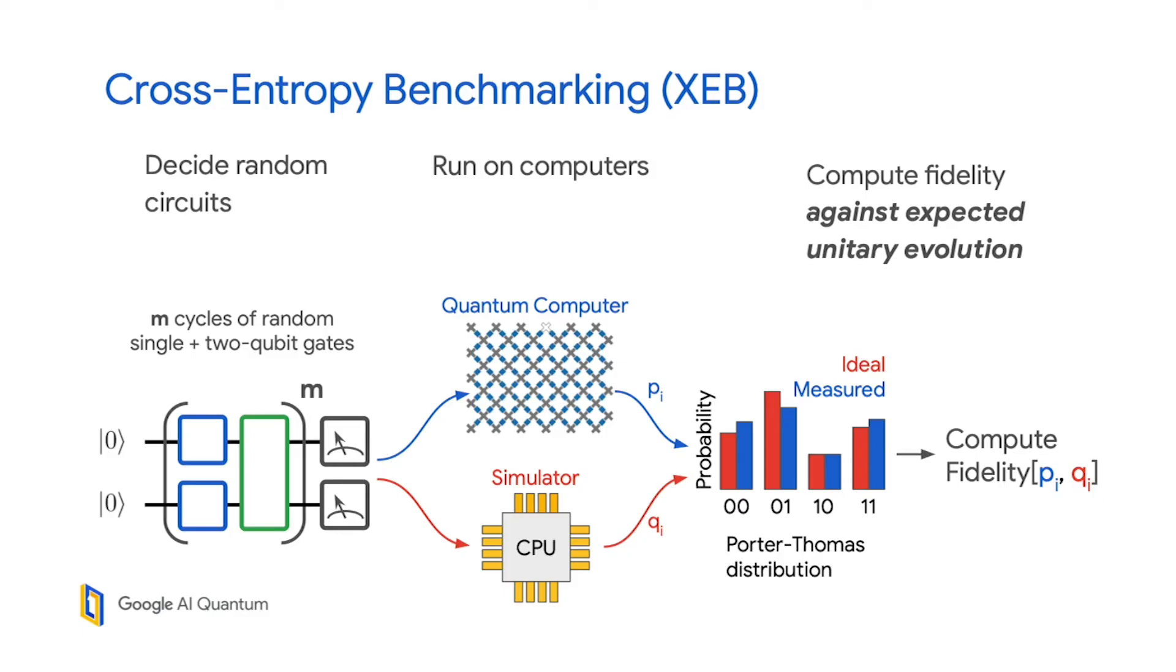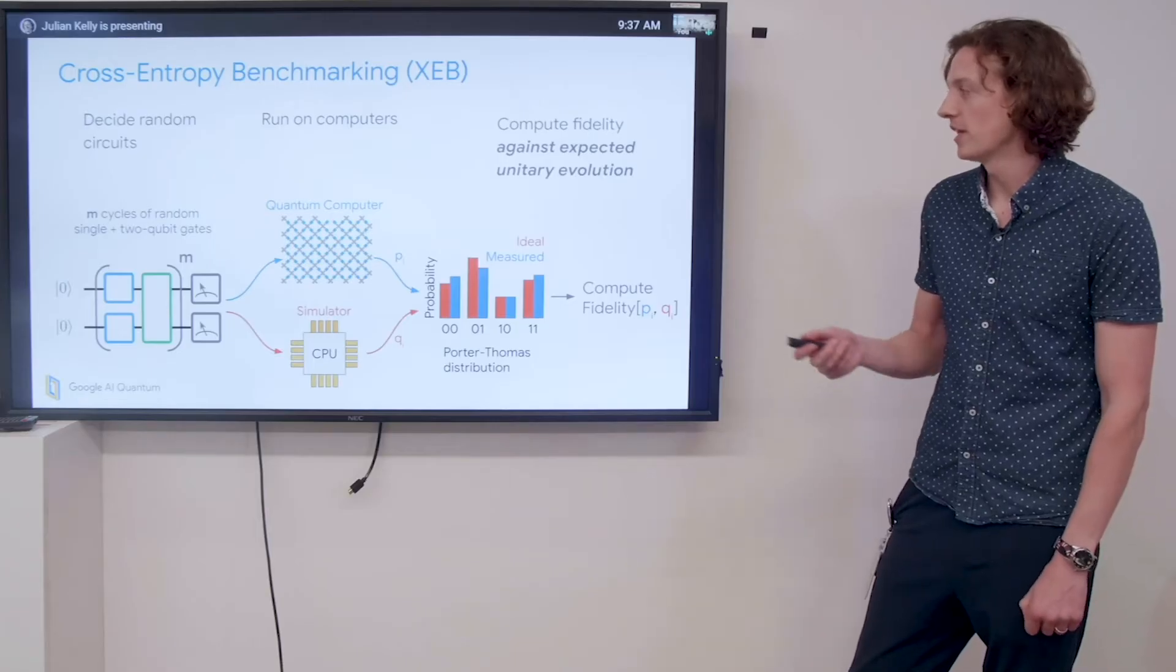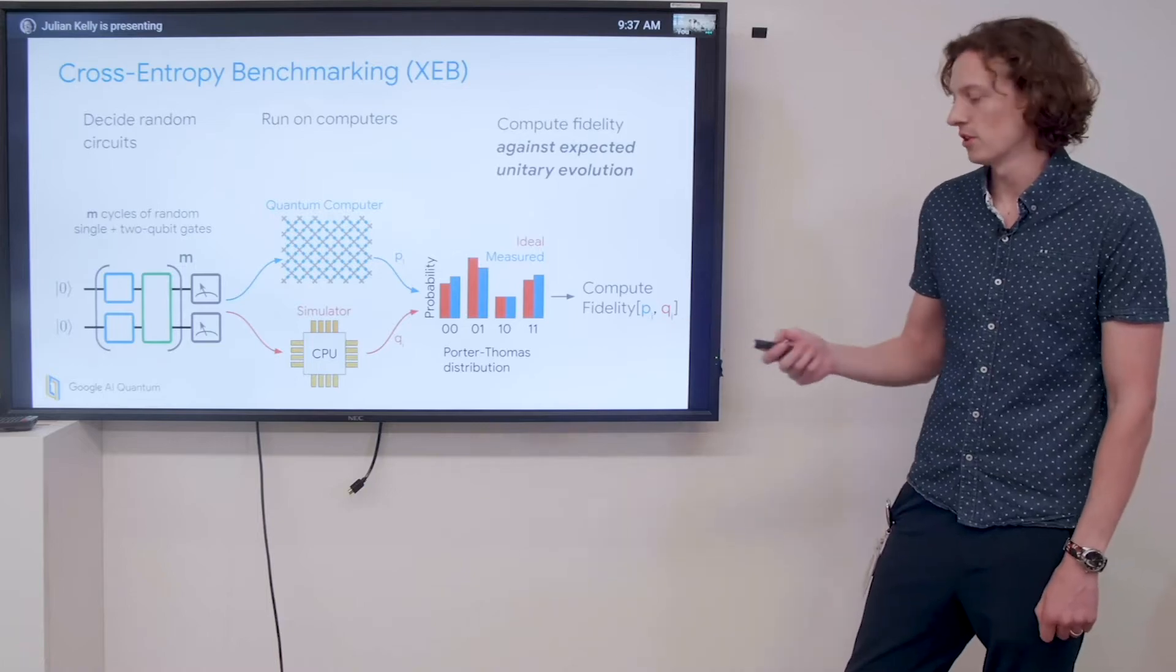We expect the ideal probabilities to be sampling from the Porter-Thomas distribution. We can then assign a fidelity for the sequence by comparing the measured and ideal probabilities to figure out how well the quantum computer has done. I want to emphasize that we are comparing the measured fidelity against the expected unitary evolution of what the circuit should have done.